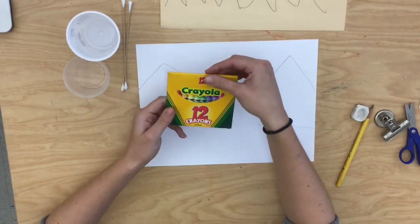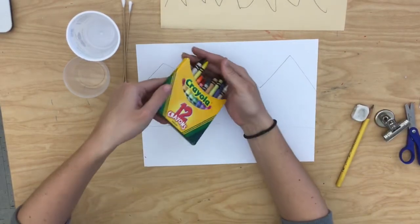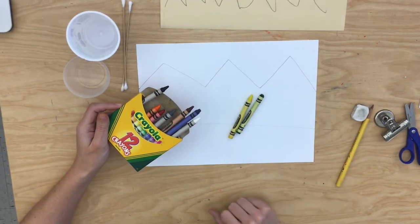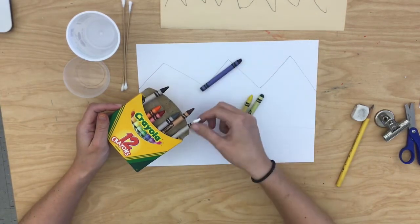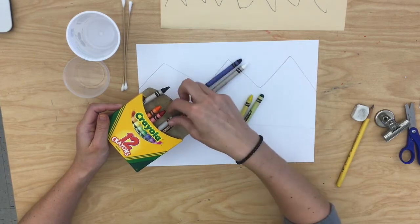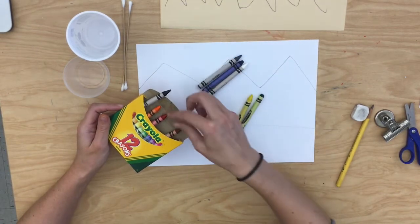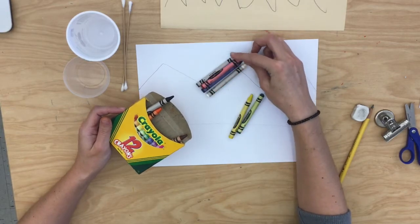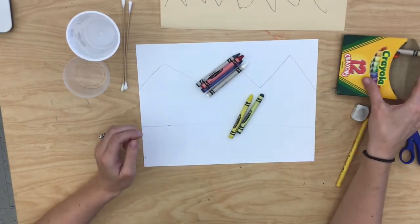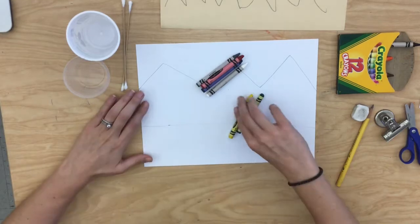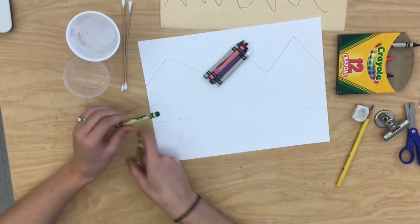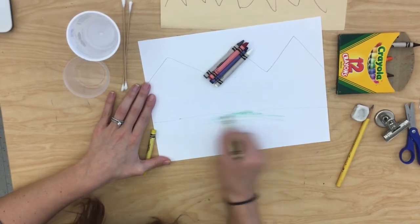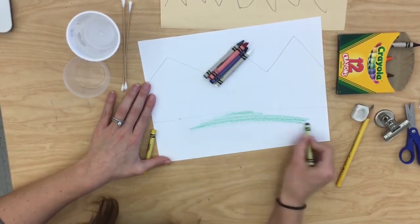At this point, you need those crayons and you should look in there and find some colors that you would like to use in your grass and also some colors that you might want to use in your sky. I might even get a little crazy and put a tiny bit of red in my sky, kind of like a sunset. First, what I'm going to do is color my grass.